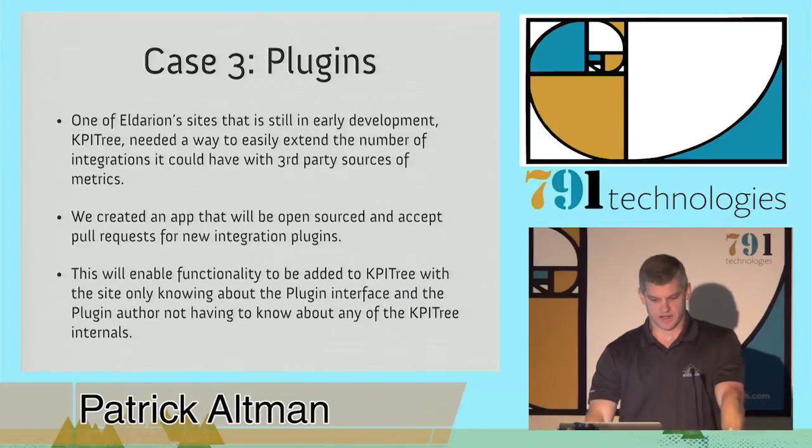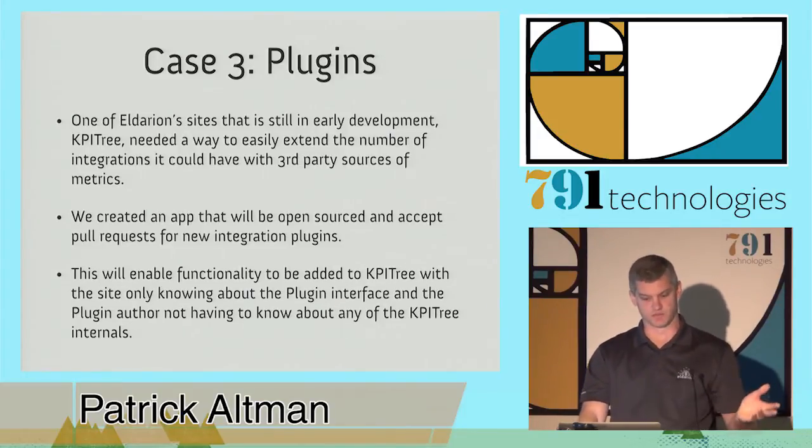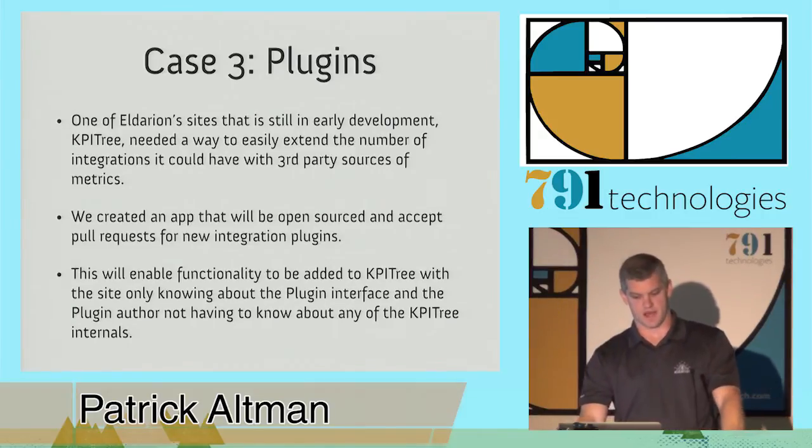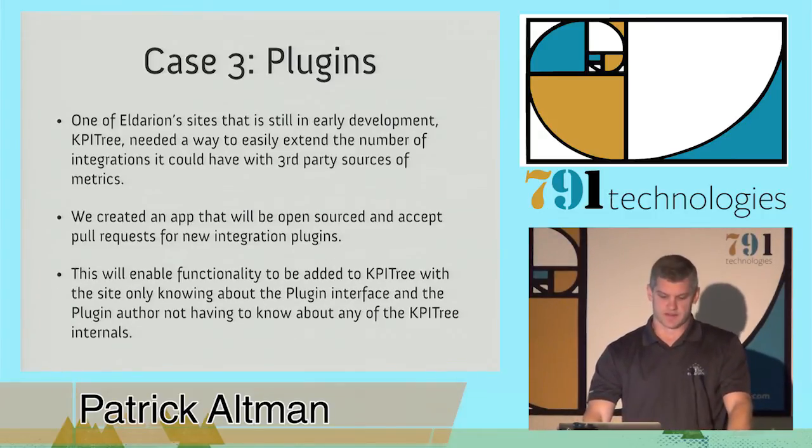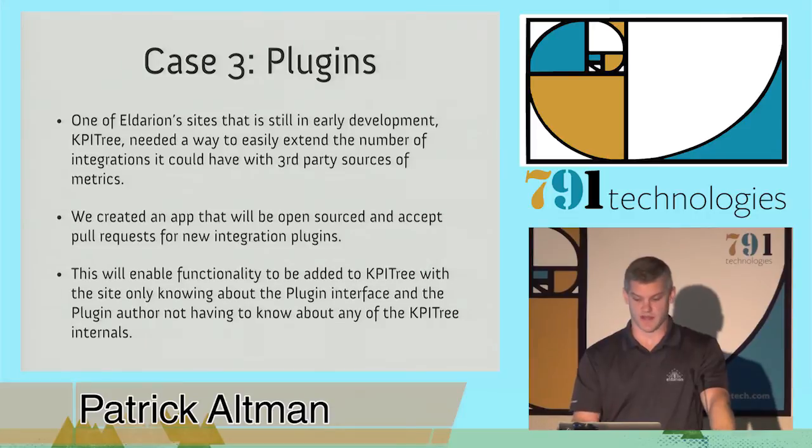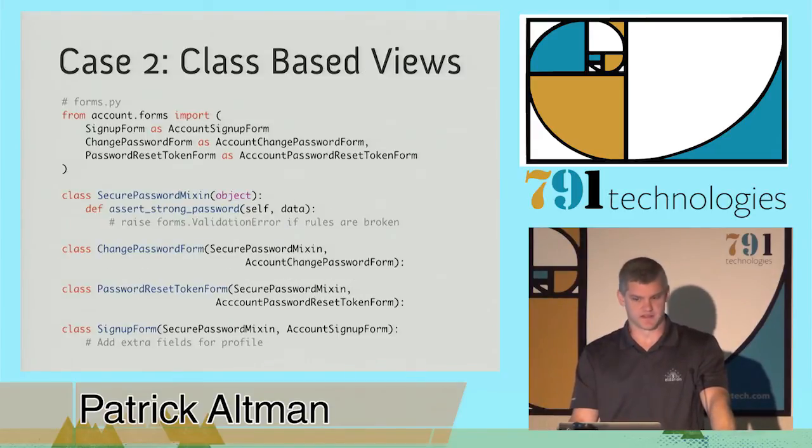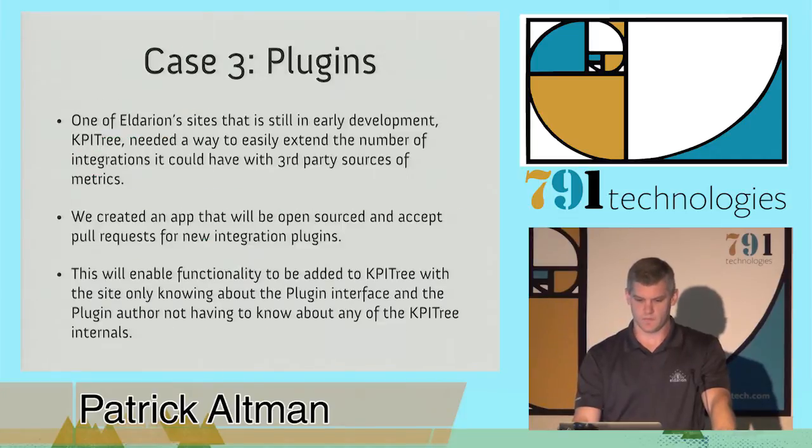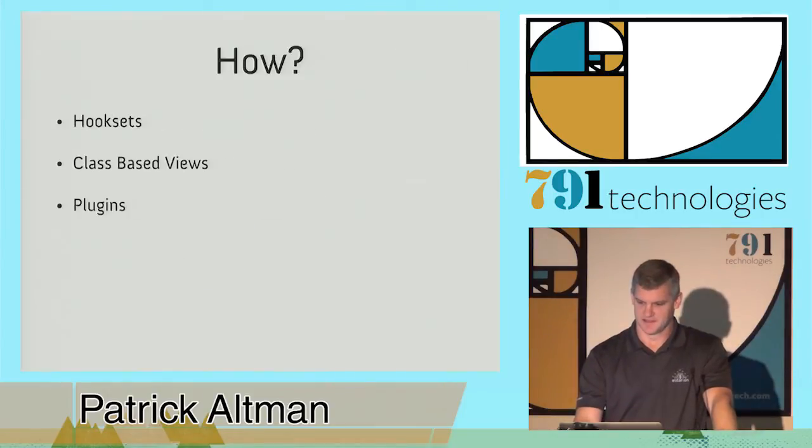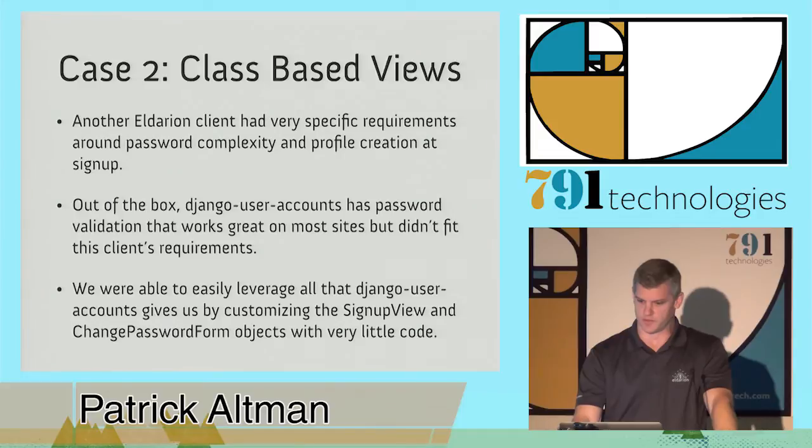And now onto plugins. So Eldarion has a site that's really in early development, KPI tree. It's a tool for teams to track metrics, scorecards, and key performance indicators. Core to this app is collecting metrics. Some of this will be manual, like coming to the site and filling out a form or responding to an email. But there's a lot of metrics that are generated from systems. And so it makes sense to automate the collection of those.